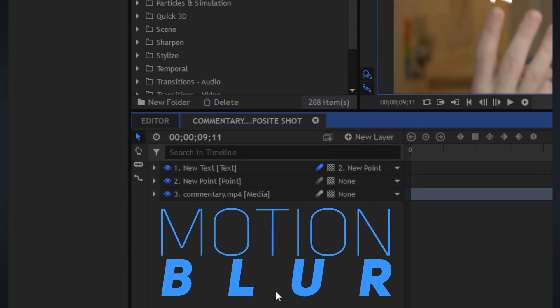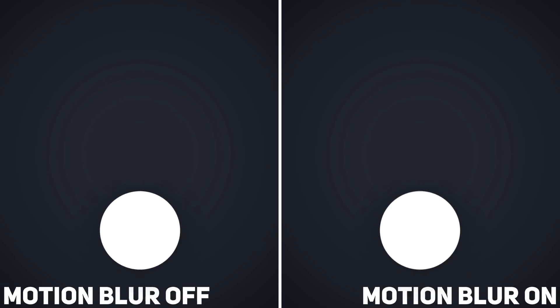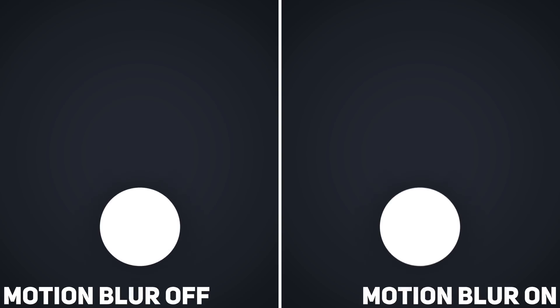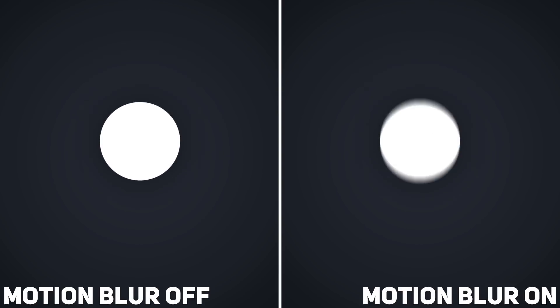One quick final step I forgot to mention is just to enable motion blur. Motion blur will add that extra little layer of realism and help make it look like you're filming on an actual camera and not making an animation. So enable motion blur — it'll help a lot.